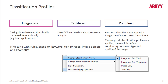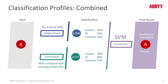If these classification profiles aren't meeting your needs, you can go to FlexiLayout Studio and add rules to further enhance classification effectiveness. This slide illustrates the combination of using a text-based and an image-based approach, where rankings of confidence levels for different matching are combined to give you a final result.